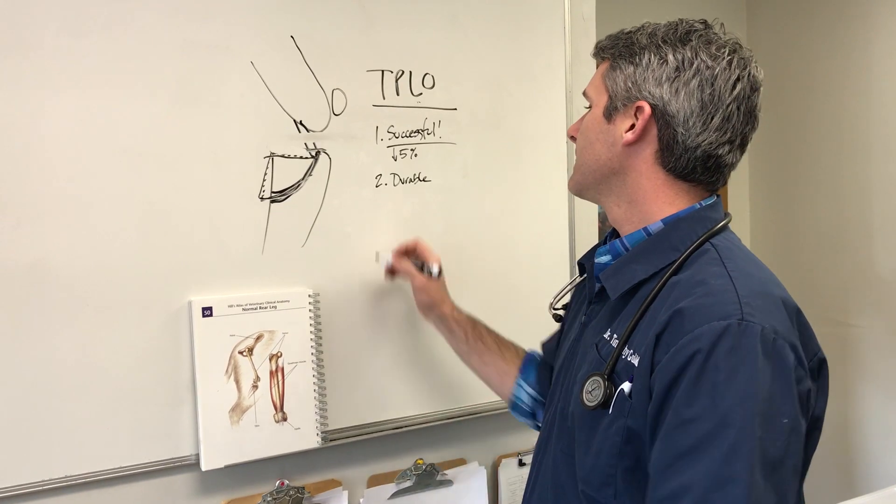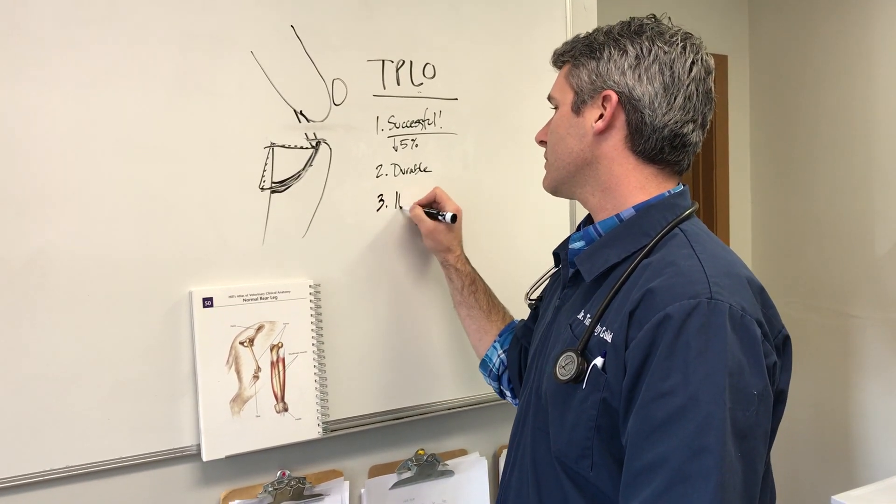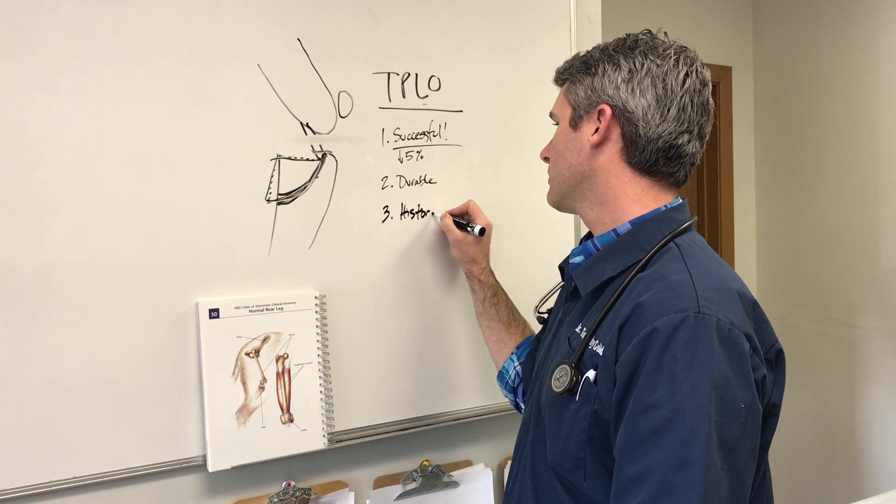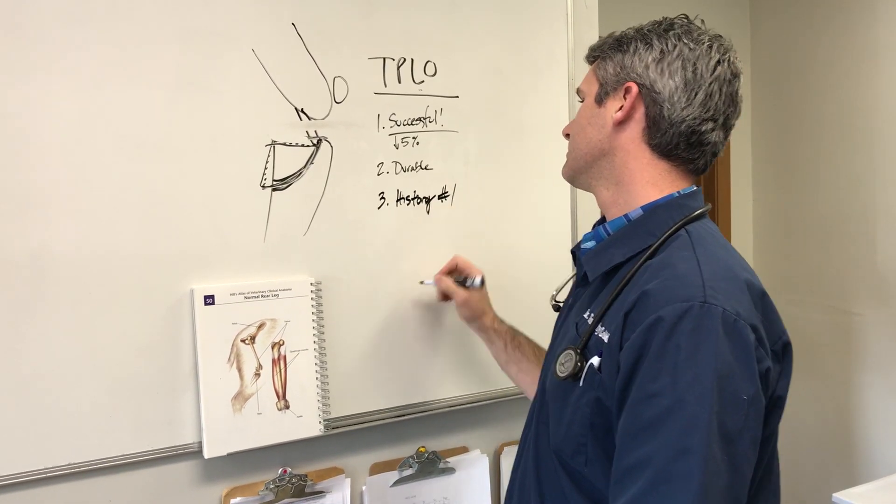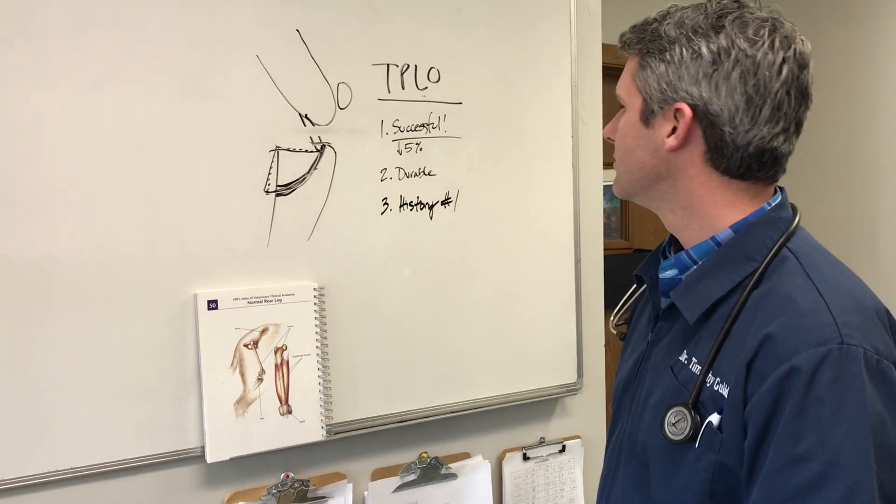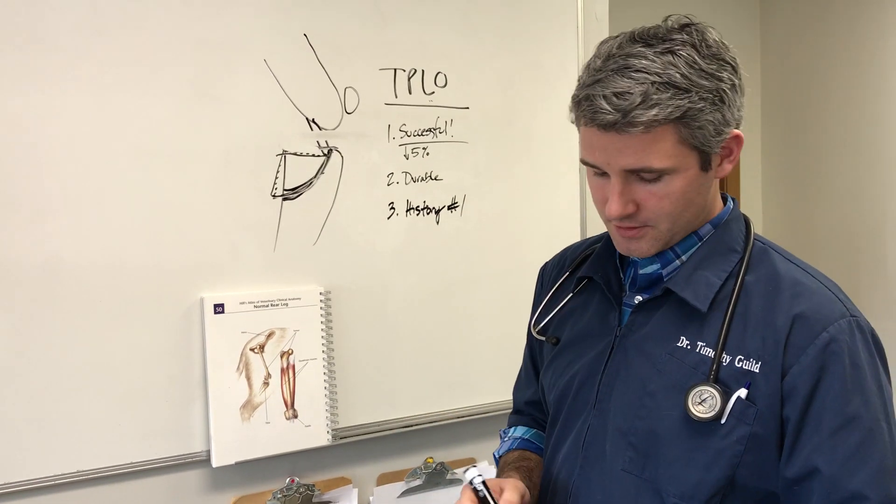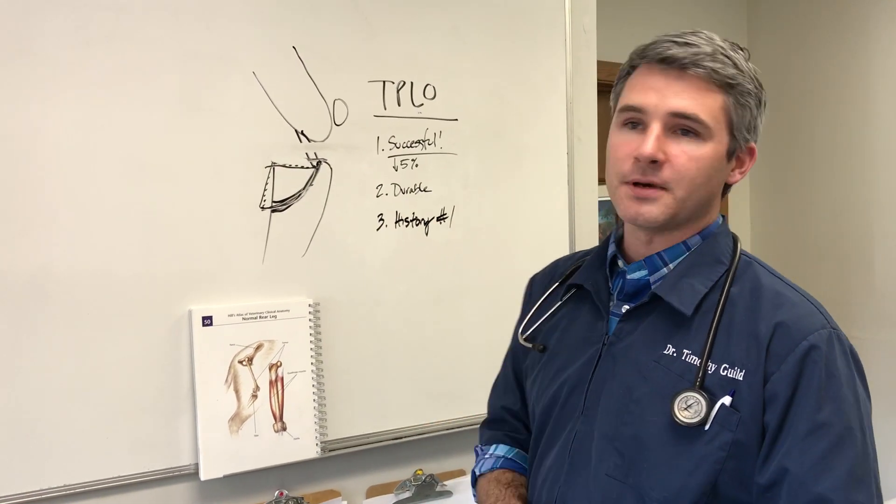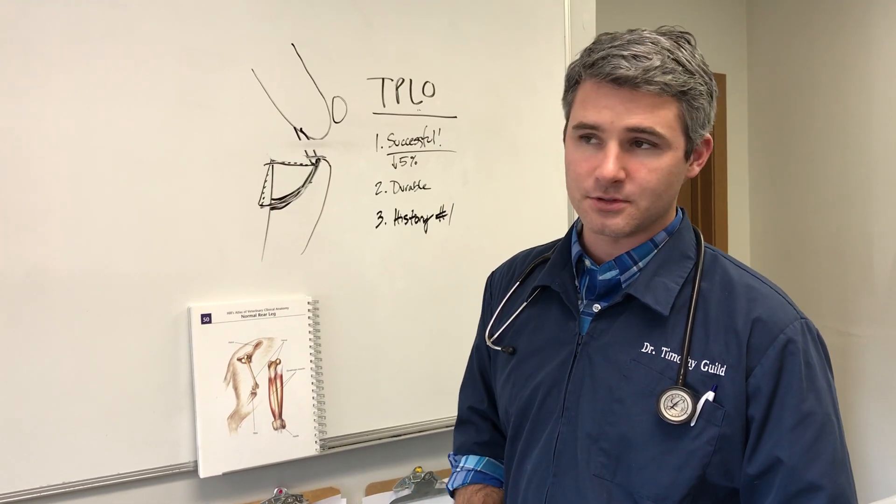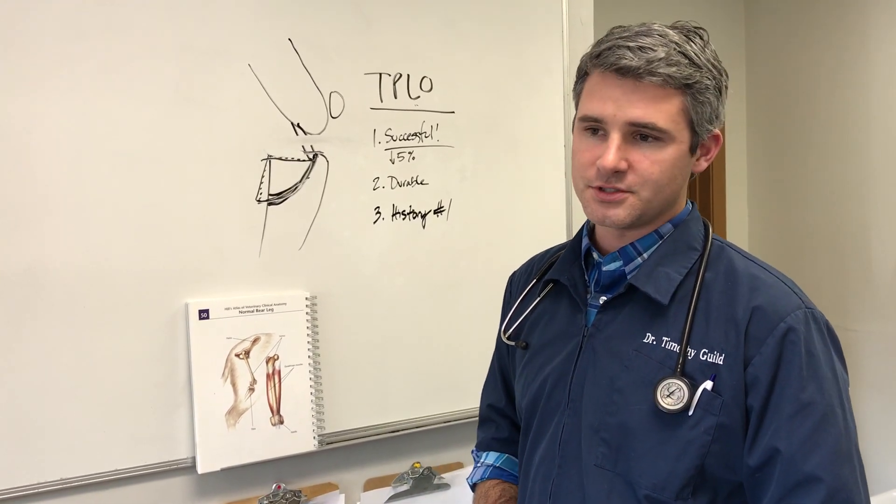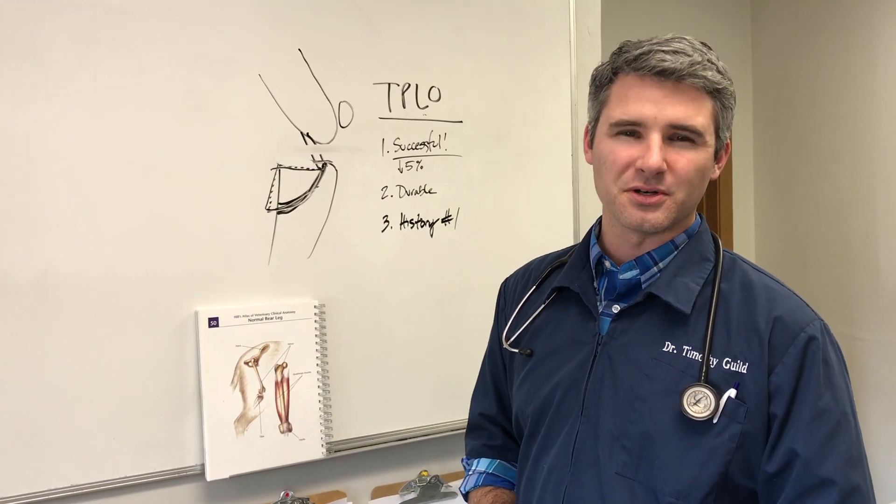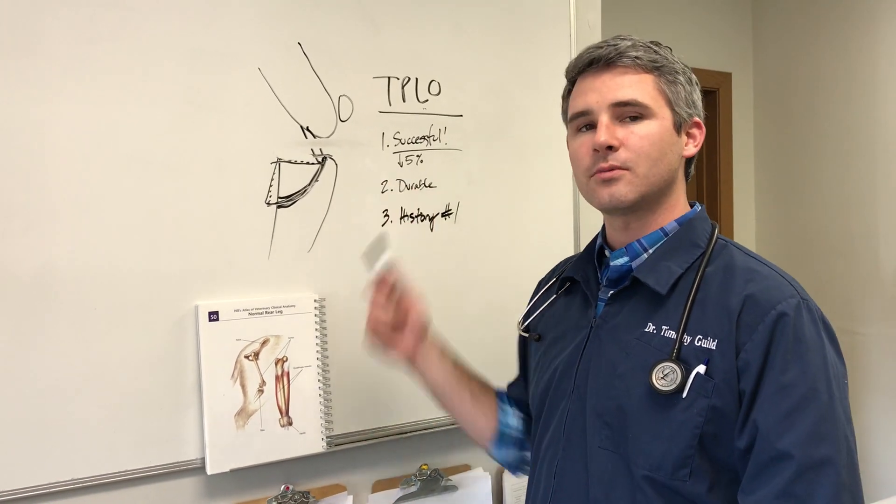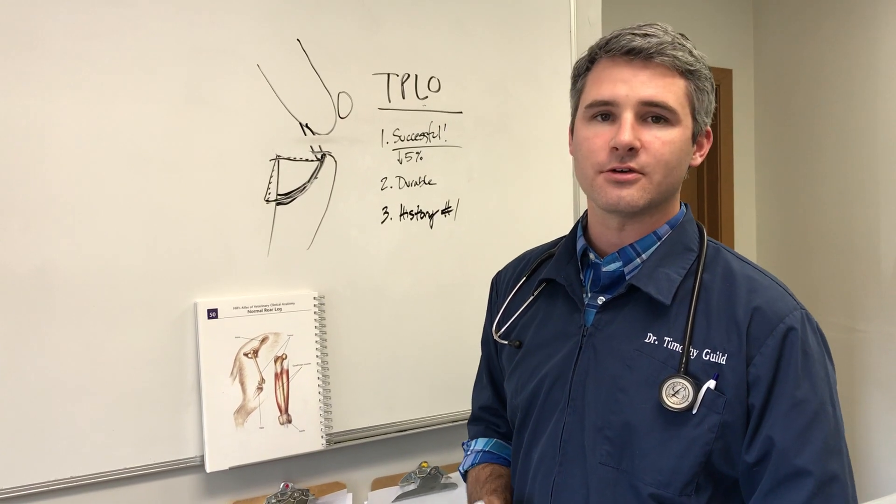And I guess the third is historically, it's number one. There's a couple of research papers that have proven that it does a little bit better. Better than the TTA, better than the extra capsular. The CBLO is a new procedure that's a little bit under review, usually done with the young dog. But this remains to be the number one way to have your dog's ACL fixed.